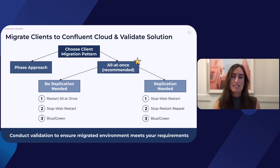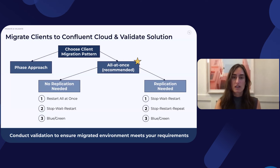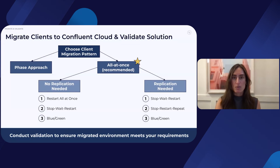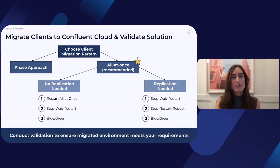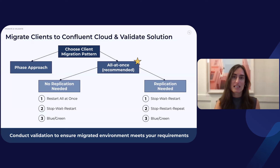There are three patterns available for both when data replication is needed and not needed. Regardless of whether you're replicating data, it's important to be mindful of any client interdependencies that may require some clients to be restarted before others. The three common patterns when not replicating historical data are: restart all at once, stop-wait-restart, or a blue-green deployment. If you require historical data to be replicated to Confluent, you also have three options: stop-wait-restart, stop-restart-repeat, or a blue-green deployment. The pattern you decide depends on the threshold for your consumers to miss messages, client interdependencies, and your downtime requirements. Additionally, the steps for each pattern will differ based on the replication tool you're using. In our white paper, you can read up on all the specific situations and examples on how these client patterns can be executed.